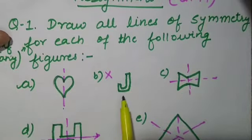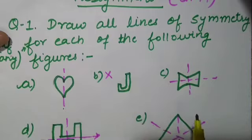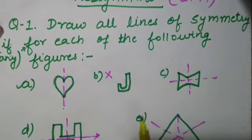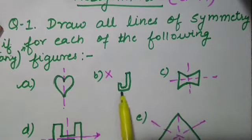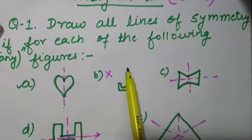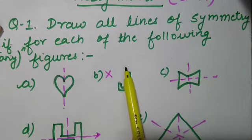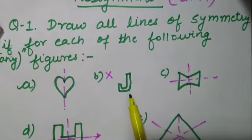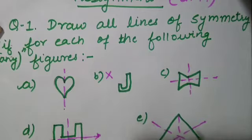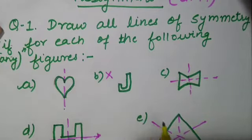Come to part B. Part B we have is the English alphabet J. We have to draw the line of symmetry if it has one. If I fold this letter along the horizontal or vertical line, those two parts will not overlap. So I can say this letter does not have any line of symmetry.